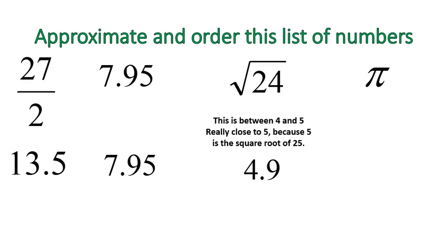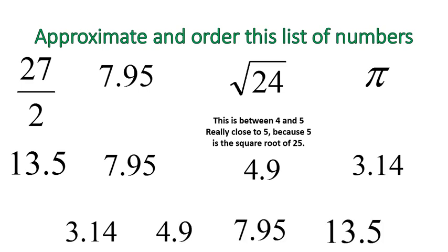Another irrational number, a common one, is pi, and that's approximated at 3.14. So now we've taken these numbers and we've made them all into decimals, and we can order them pretty easily: 3.14, 4.9, 7.95, and 13.5. Now they're in order from least to greatest.